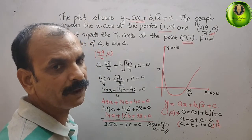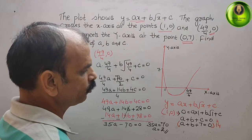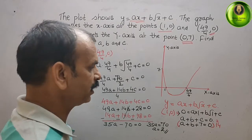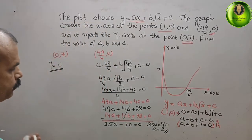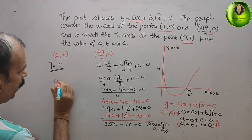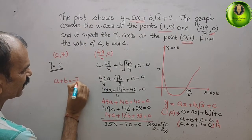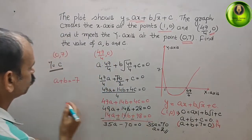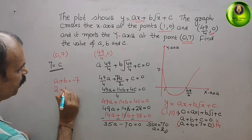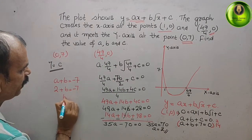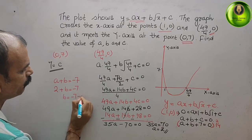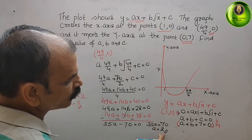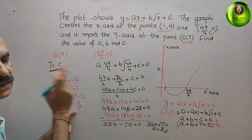Now finding b using the equation a + b = -7. Substituting a = 2: 2 + b = -7, so b = -7 - 2 = -9. Therefore, a = 2, b = -9, and c = 7.